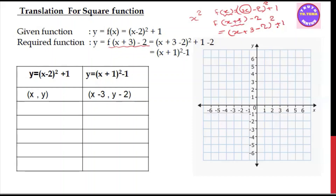So (x plus 2) whole square is equal to x plus 2. But we have minus 2 — so this is not quite right. Let's re-examine: the whole square equals x plus 2, but we have minus 2 here, which needs correction.